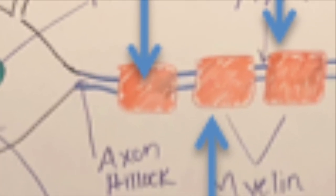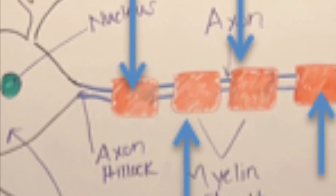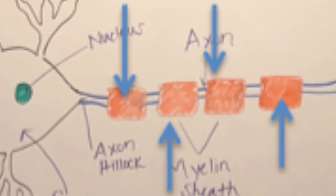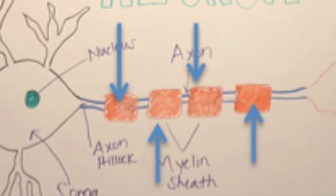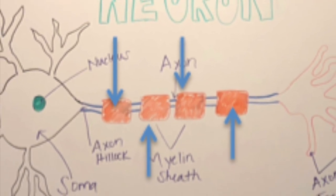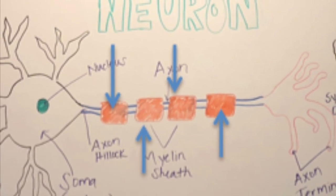Axons are typically coated by the myelin sheath, which helps to insulate the axon to help speed up transmission. The myelin sheath is made by either Schwann cells in the peripheral nervous system or oligodendrocytes in the central nervous system.